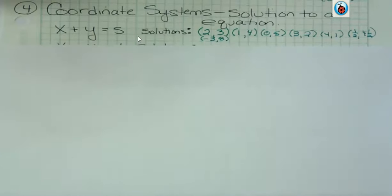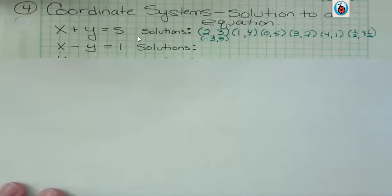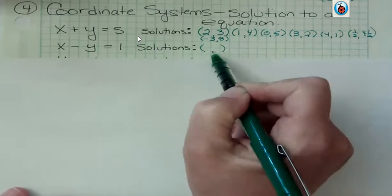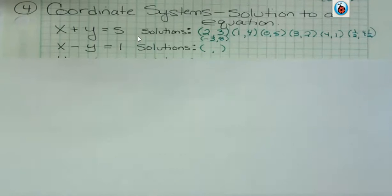All those solutions are going to be given as ordered pairs. So what about this one? Another one. x minus y is 1. What's a solution to that? You could think of anything. And this is one of the things about graphing that students have issue with. It's like, I don't want to come up with my own. I want somebody to tell me what to do.